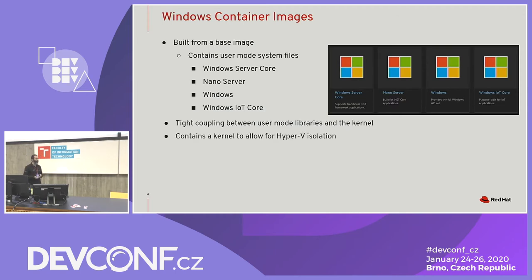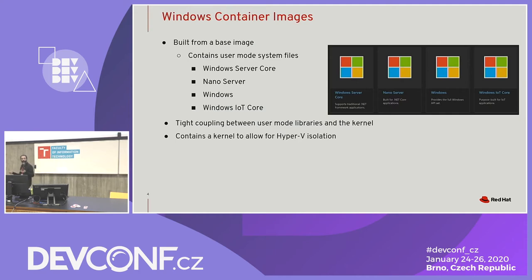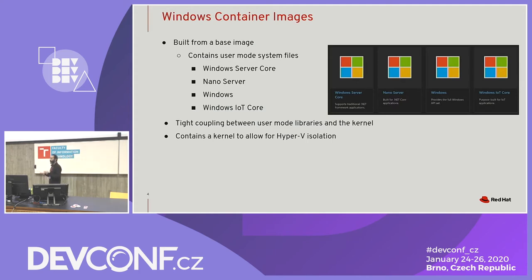The other reason for having a kernel in the image is Hyper-V isolation — you're running in a VM and if you want to run in a VM, you have to boot from a kernel. So your container image not only contains your application and any libraries it needs, it also needs the kernel in there. It comes with the game if you're running Windows applications.